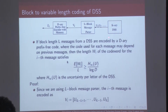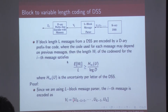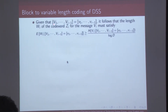The setup is like this: we have a discrete stationary source with memory emitting these U_i's. We create a block of L bits, denoted V_i, which are mapped to codewords Z_i that are prefix-free. How we map depends also on what the previous bits are. The i-th block is essentially from U_{iL-L+1} to U_{iL}. So the first block is U_1 to U_L, the second block is U_{L+1} to U_{2L}, and similarly the i-th block will be U_{iL-L+1} to U_{iL}.